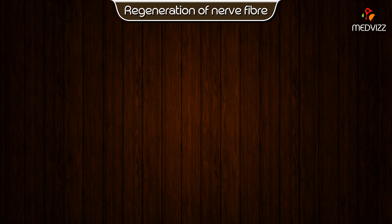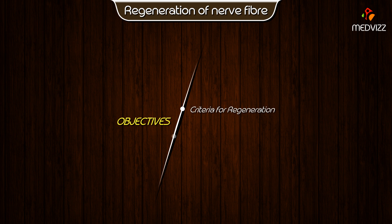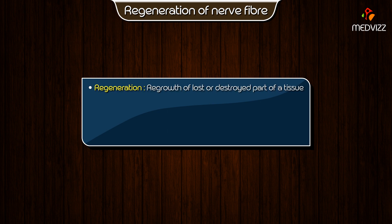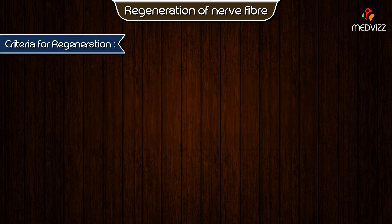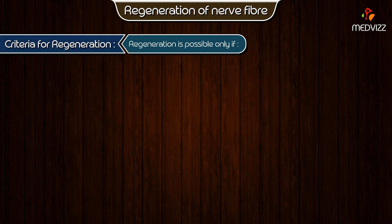In this topic we are going to be dealing with the criteria for regeneration and the stages of regeneration. The term regeneration refers to regrowth of a lost or destroyed part of a tissue. The injured and degenerated nerve fiber can regenerate. It starts as early as the fourth day after injury, but becomes more effective only after 30 days, and is completed in about 80 days.